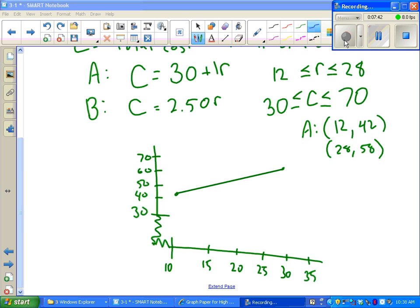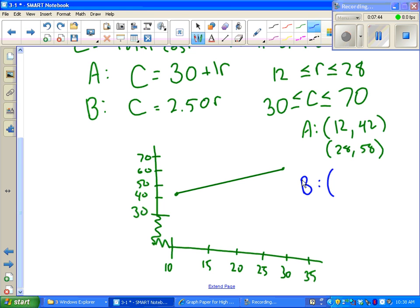We also came up with some values for B. When I plugged in 12, I got 30. And when I plugged in 28, I got 70. So I can plot those points and draw a line using blue.